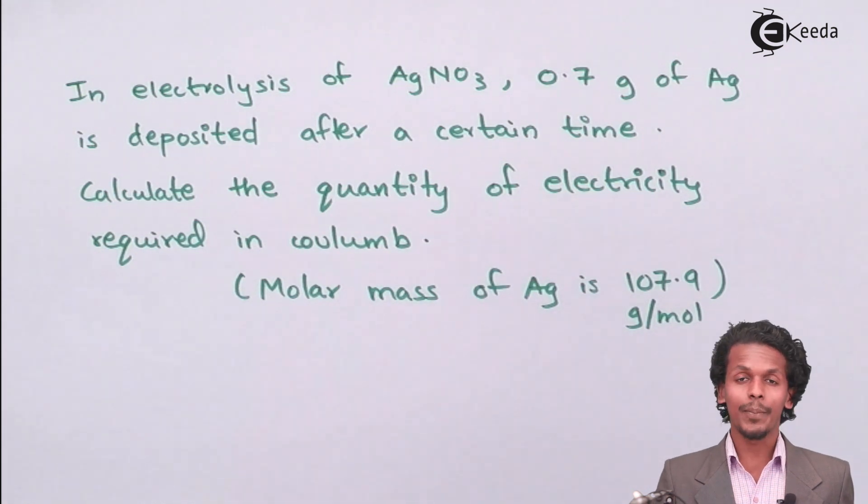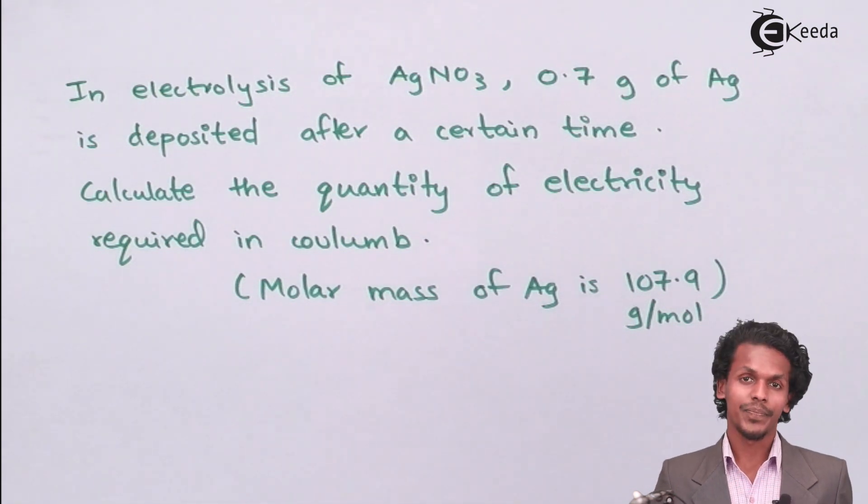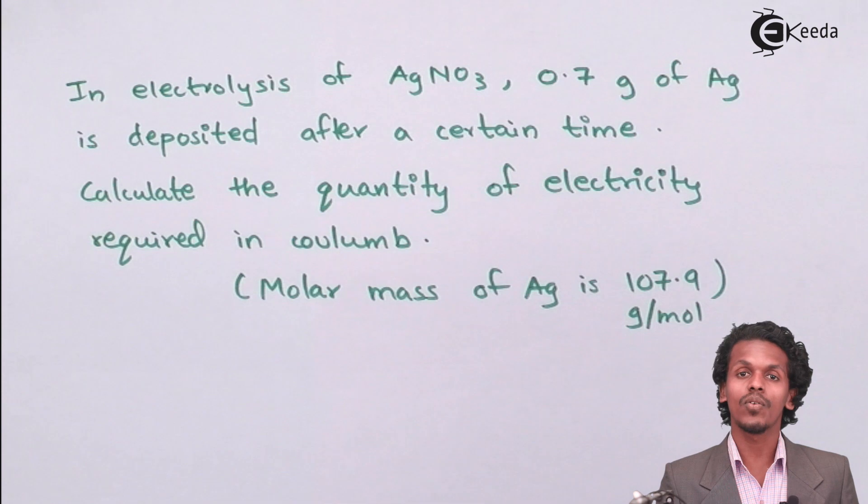Because current has a unit of ampere and time has a unit of seconds, ampere into second is nothing but coulomb. Therefore we have to calculate i into t.